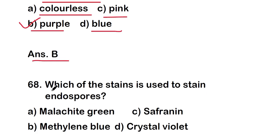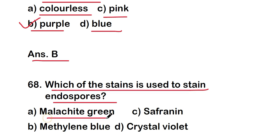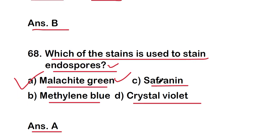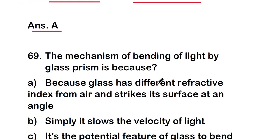Next question: which stain is used to stain endospores? The options are malachite green, methylene blue, safranine, or crystal violet. The right answer is option A — malachite green is the stain used to stain endospores, so it is used in endospore staining.